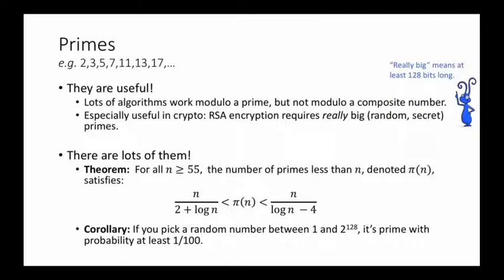So prime numbers. You know what prime numbers are. They're like 2, 3, 5, 7, 11, 13, 17, and so on. These are numbers that have no divisors except themselves and 1.